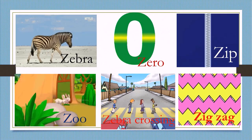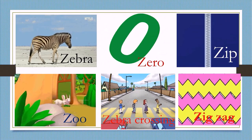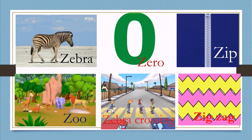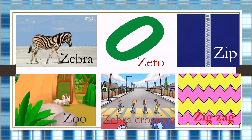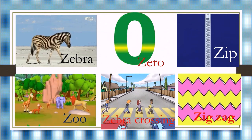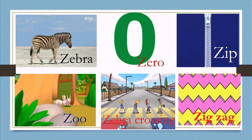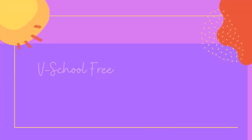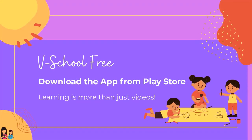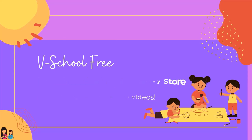Let's see some pictures starting with the letter Z. Z for zebra, zero, zip, zoo, zebra crossing, zigzag. You found Z!